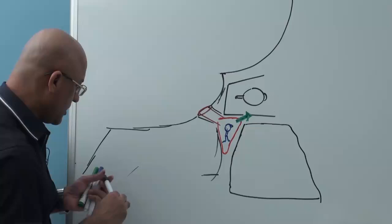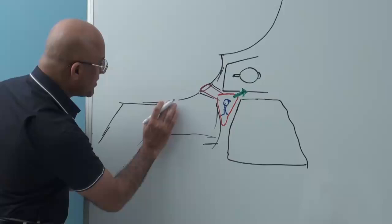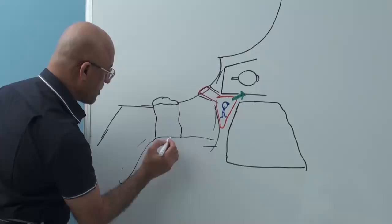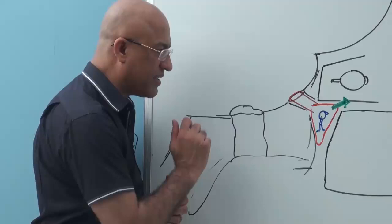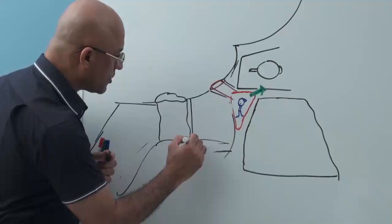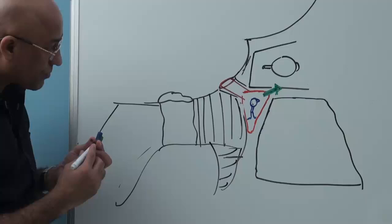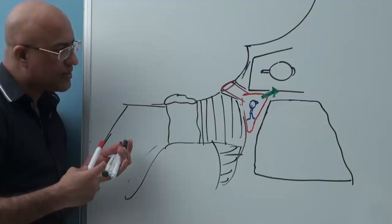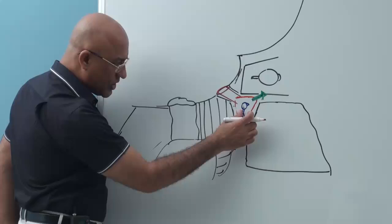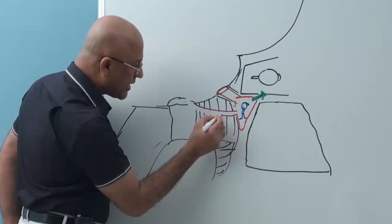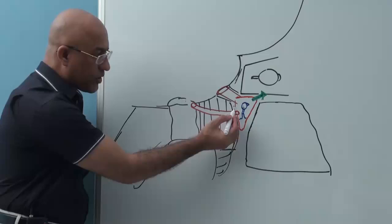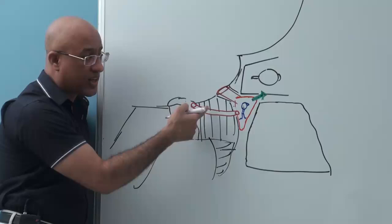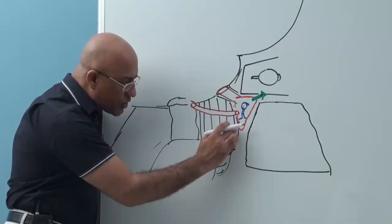Then here is another structure — foramen lacerum. It is actually not a true foramen but a gap in the base of the skull surrounded by multiple bones. There is a canal from the back reaching the upper part of foramen lacerum — this is called the pterygoid canal. And from here there is another canal going backward, eventually ending up into the nasopharynx.